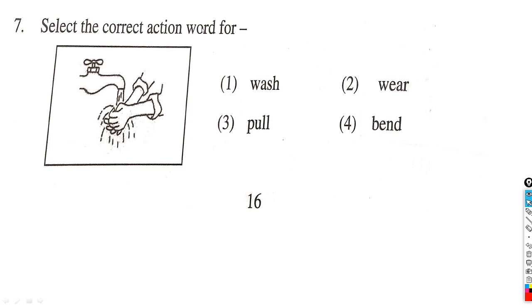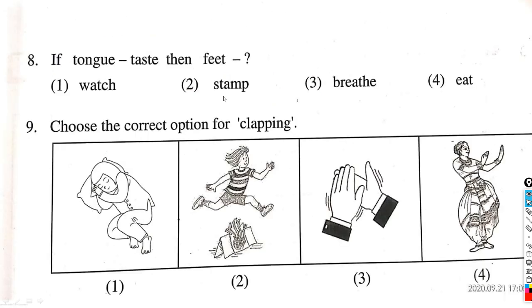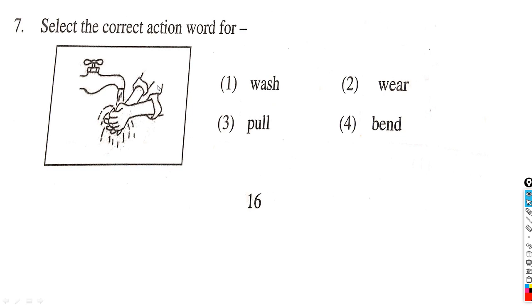Let's see question number 7: Select the correct action word. In this picture there is a nail and this is a hand. What is he or she doing? Yes, correct - wash. In this picture what is the girl or boy doing? Correct - wash the hand.